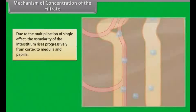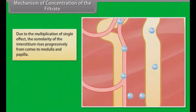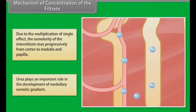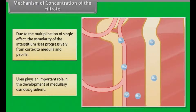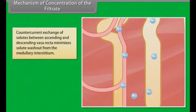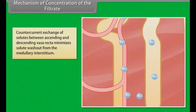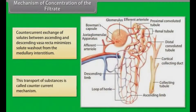Due to multiplication of the single effect, the osmolarity of the interstitium rises progressively from the cortex to the medulla at the papilla. Urea plays an important role in the development of the medullary osmotic gradient. Counter-current exchange of solutes between the ascending and descending vasa recta minimizes solute washout from the medullary interstitium. This transport of substances is called the counter-current mechanism.